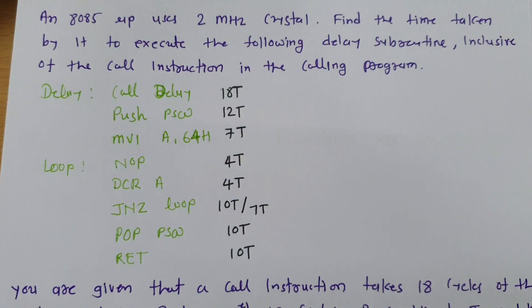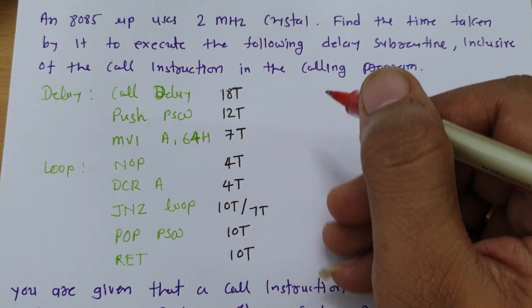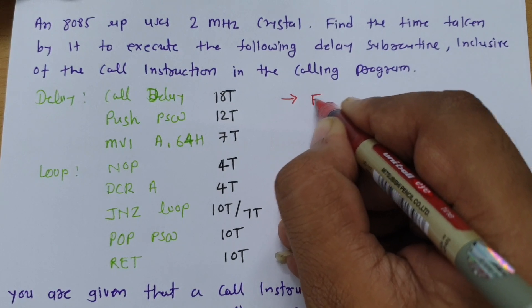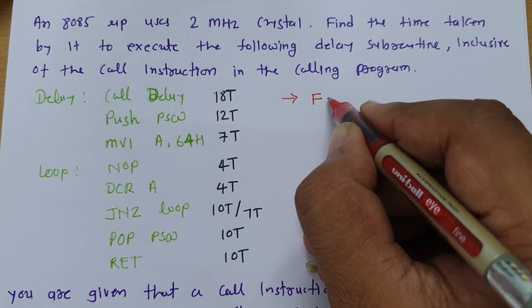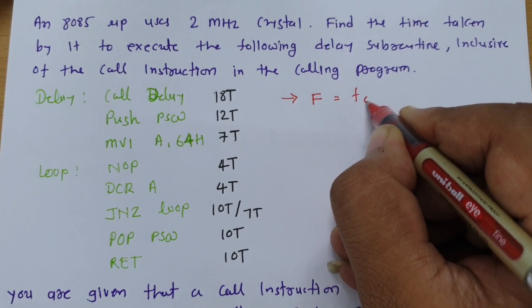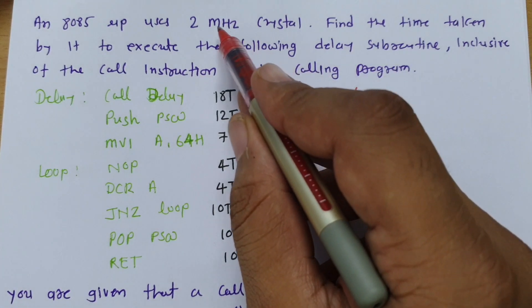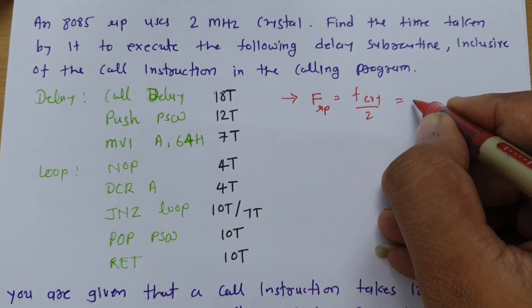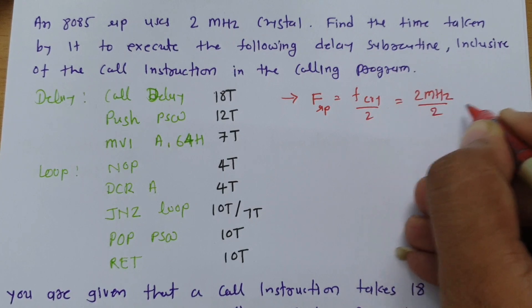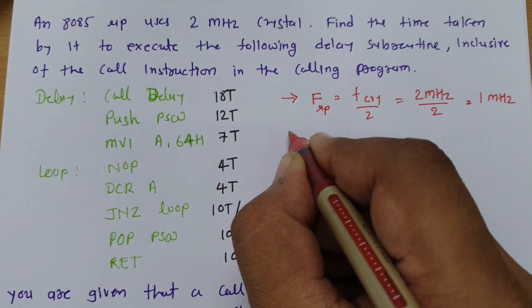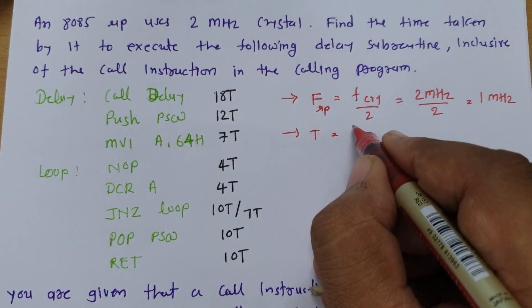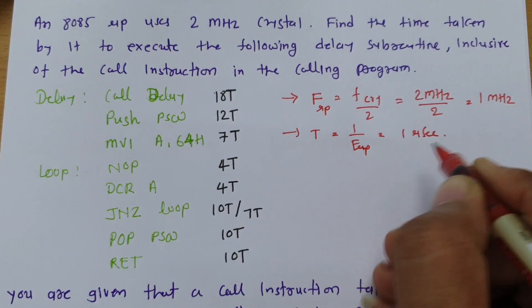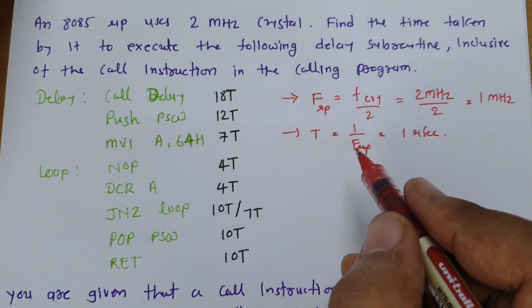Before the final calculation, we should know the microprocessor frequency. The microprocessor frequency equals crystal frequency divided by 2. Crystal frequency is 2 megahertz, so microprocessor frequency is 2 MHz ÷ 2 = 1 megahertz. The time period for 1 T-state is 1 divided by microprocessor frequency, which is 1 ÷ 1 MHz = 1 microsecond per T-state.